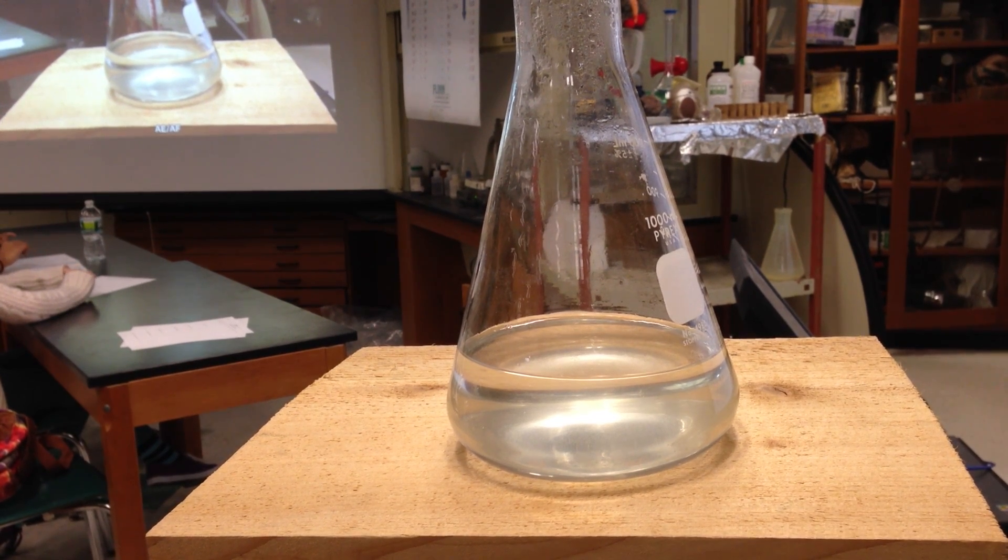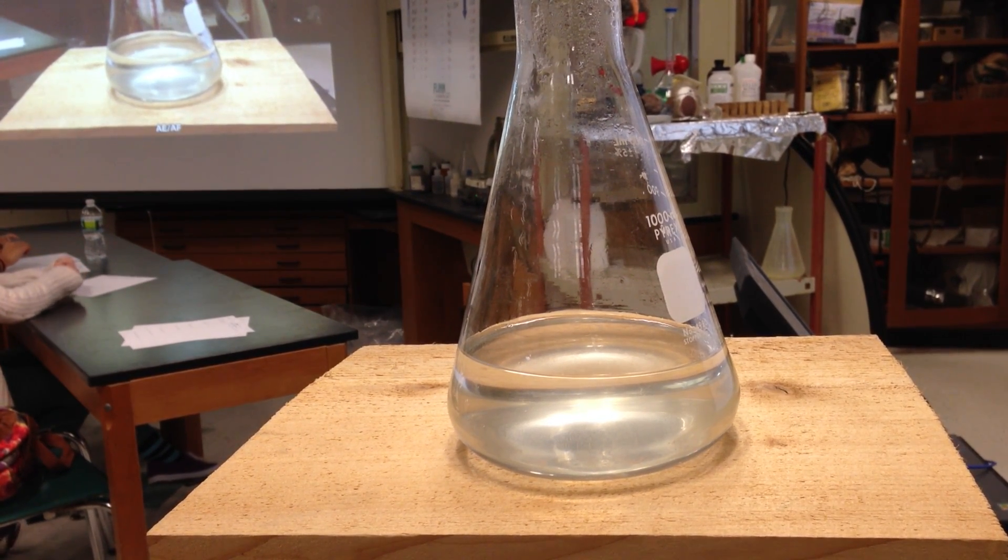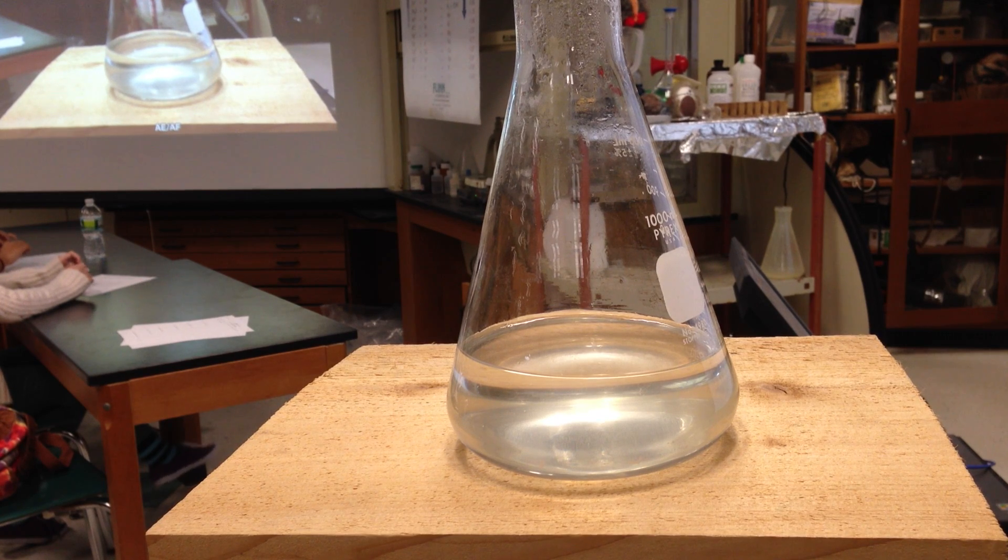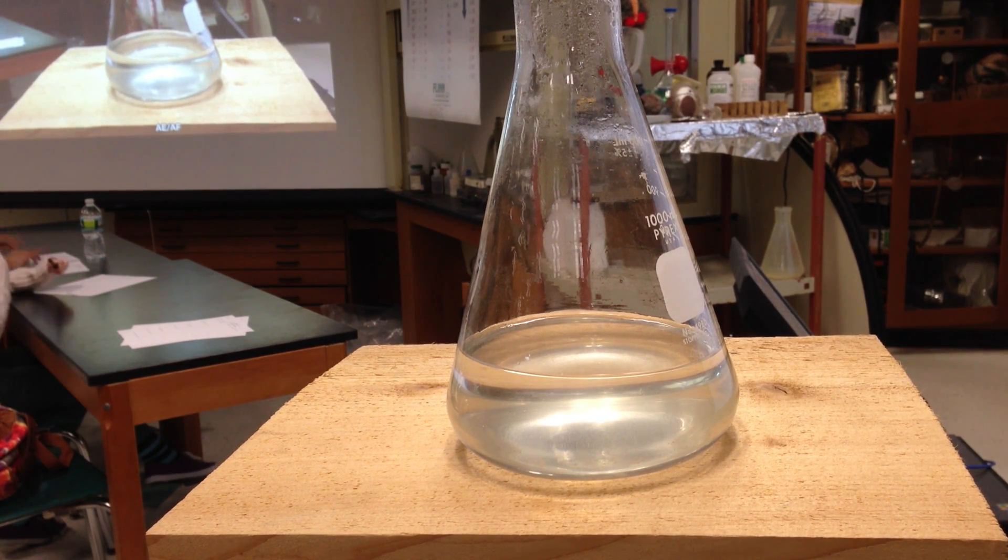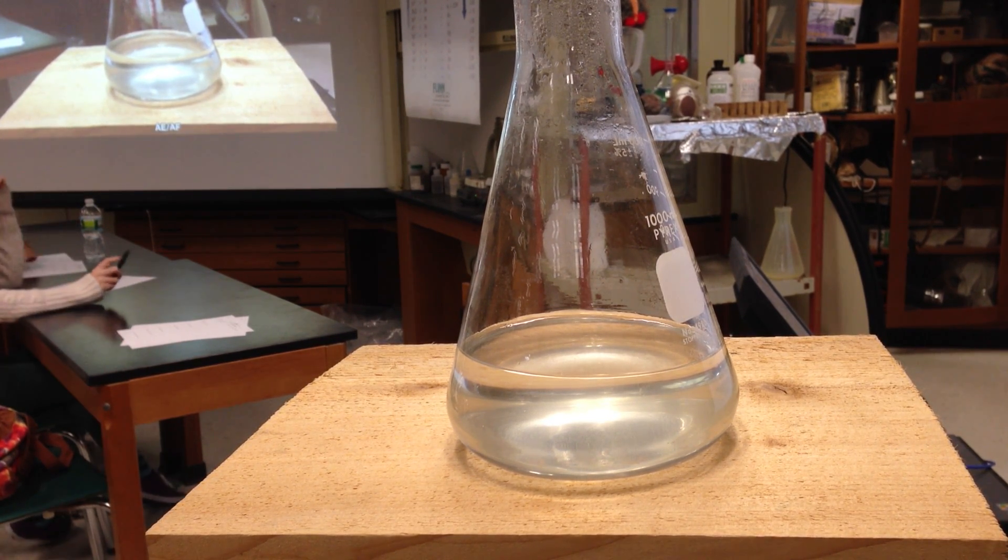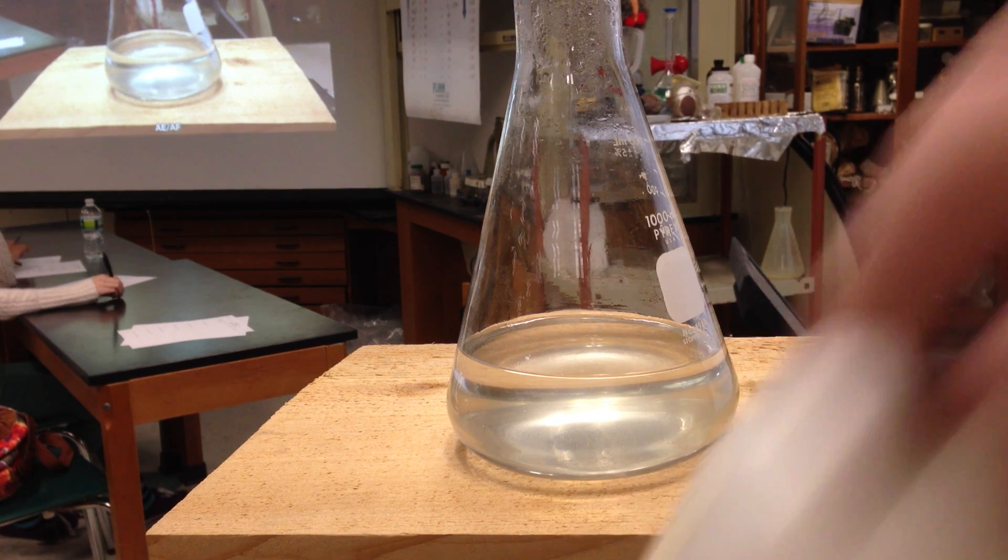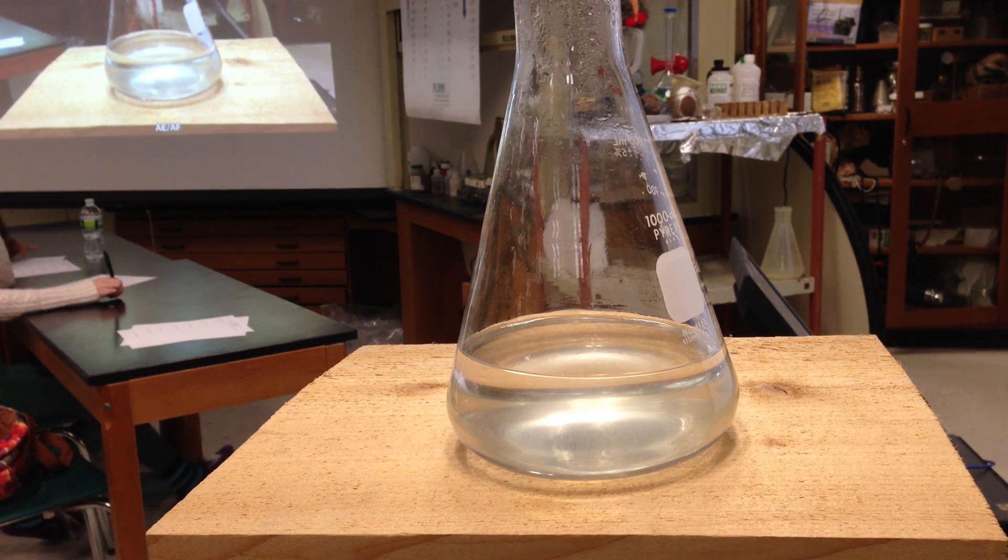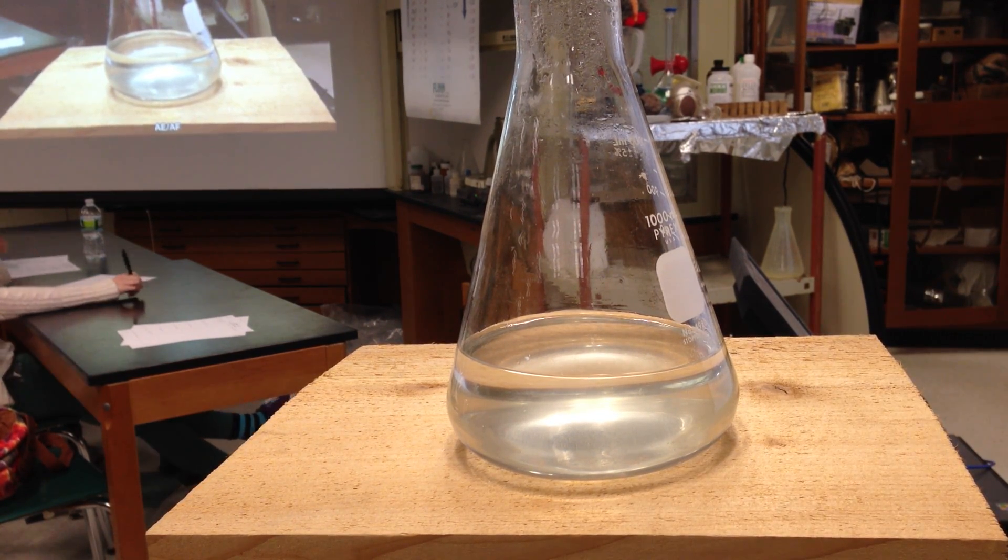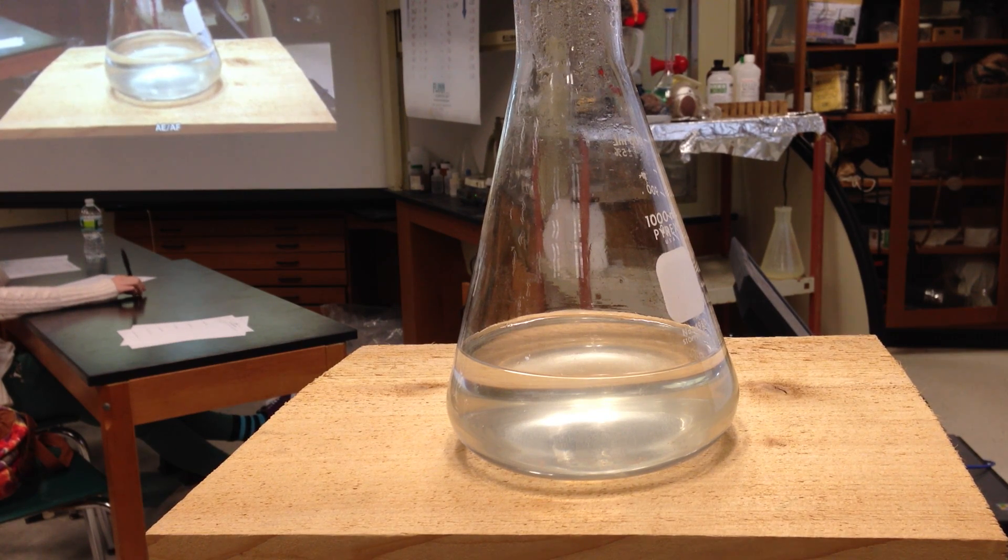So what I have here is a supersaturated solution in this big 1-liter Erlenmeyer flask. And what I'm looking to do is, hopefully if I made this right, be able to show how this supersaturated solution actually will come out of solution as I pour it.